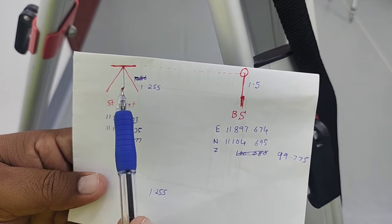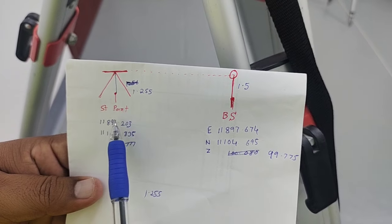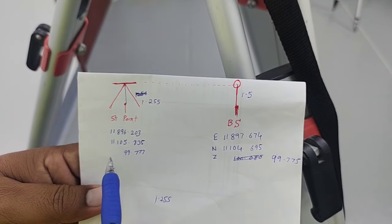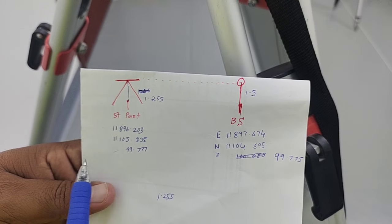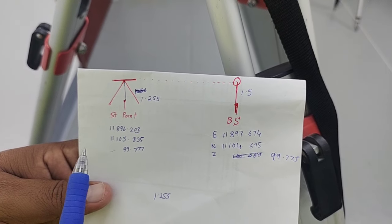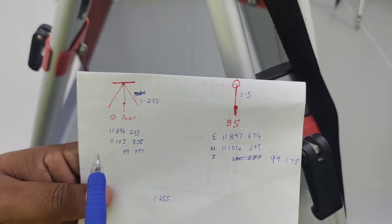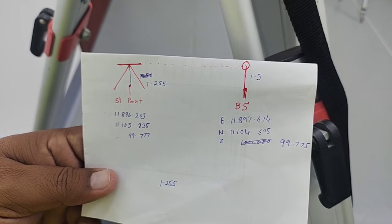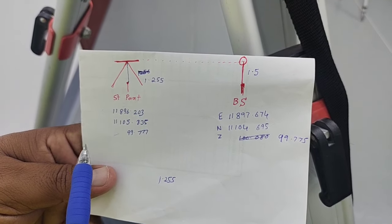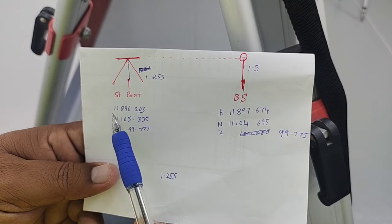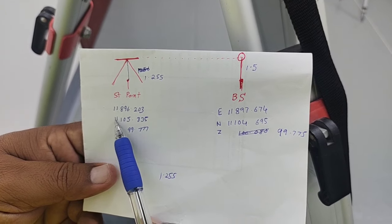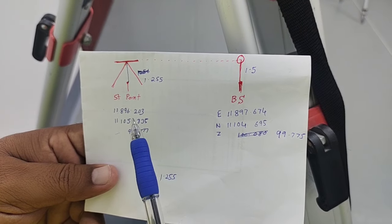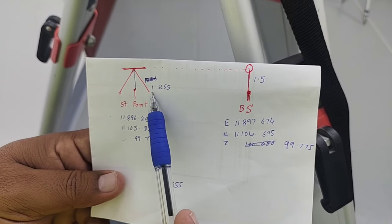For example, this is our total station and if we have a station point with given north and east values — the first is the east value, another is north, and there's a Z value. This is the default setting in the Leica. We can change it in the settings options if needed — for example, we can make it north and east — but by default in this instrument we have east first, then north, then elevation.